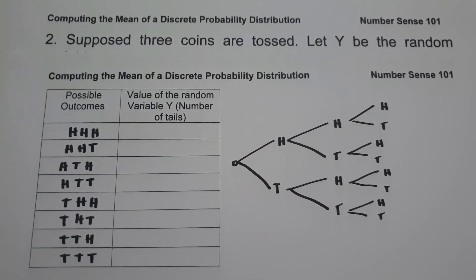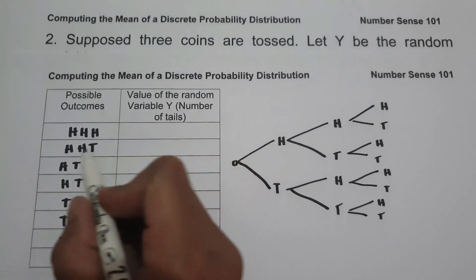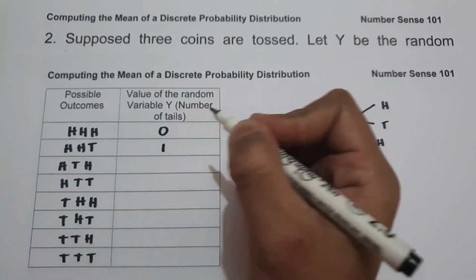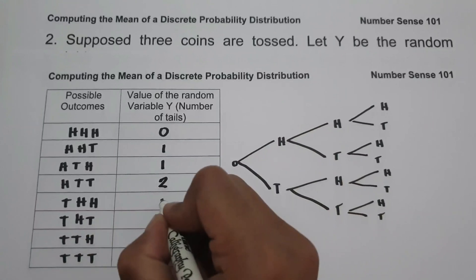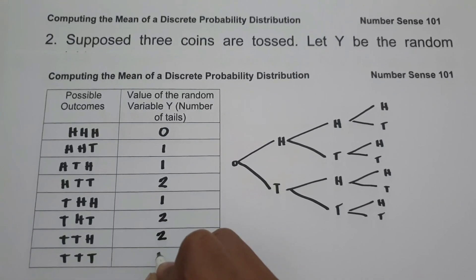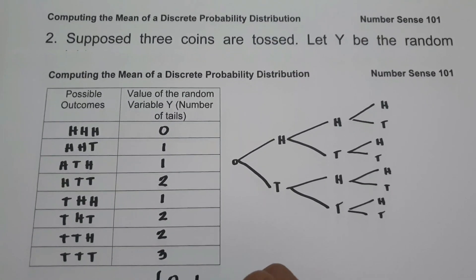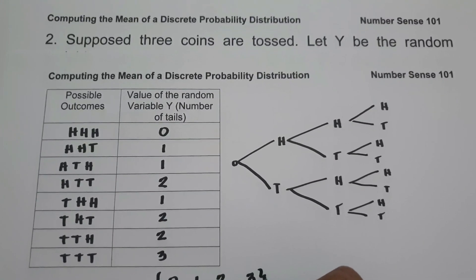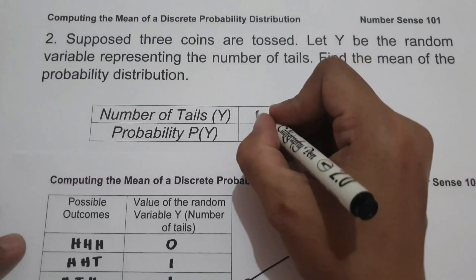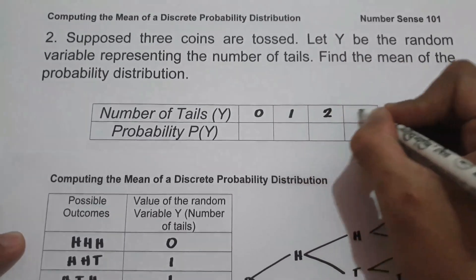To determine the value of random variable Y, which is the number of tails, we count the number of tails in each outcome. HHH has 0 tails; HHT has 1; HTH has 1; HTT has 2; THH has 1; THT has 2; TTH has 2; TTT has 3. Therefore, the random variable Y takes values 0, 1, 2, and 3. We use this to complete the table with Y values 0, 1, 2, and 3.